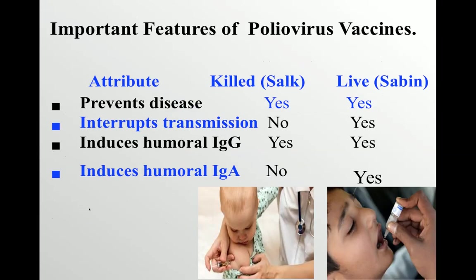An important examination question: enumerate the features of polio virus vaccines — the killed Salk vaccine versus the live Sabin vaccine. Both vaccines prevent disease. However, interruption of transmission is only seen with Sabin, because it is the oral vaccine taken into the intestine where transmission occurs. The killed Salk vaccine does not interrupt transmission. IgG is produced by both vaccines, but intestinal IgA is produced only by the live Sabin vaccine.